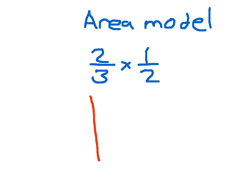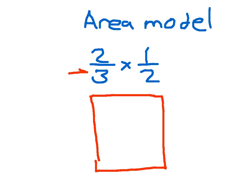For an area model, we draw a square to begin with. Then we look at that first factor, 2 thirds. The 3 is what tells us how many parts things are divided into. So we're going to use that 3 and draw horizontal lines within our square for those thirds. The horizontal lines are drawn in orange, dividing the square into 3 parts.